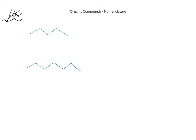Let's take a look at these two molecules to see if we can name them using the IUPAC system involving prefixes, infixes, and suffixes. In the first molecule, we see that there are five carbons. When we refer to our table of number prefixes, the prefix for five carbons is pent. The carbon-carbon bonds are all single bonds, and the only atoms present are carbons and hydrogens, so this molecule is a hydrocarbon and we use the suffix -e. Putting the prefix, infix, and suffix together, the name of this compound is pentane.